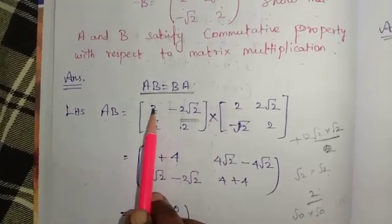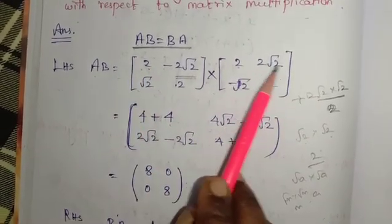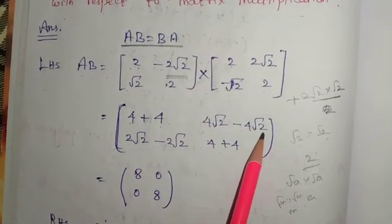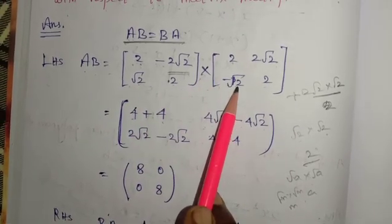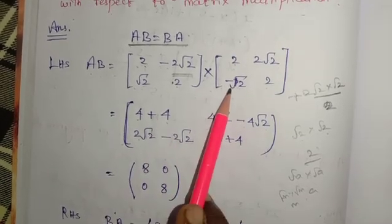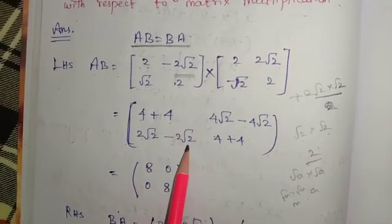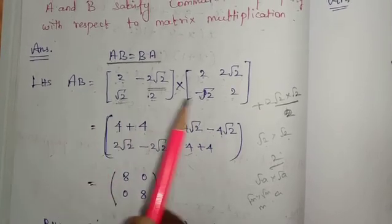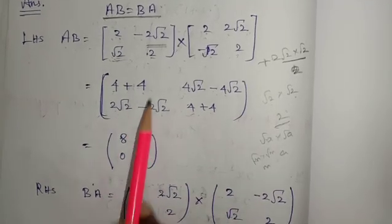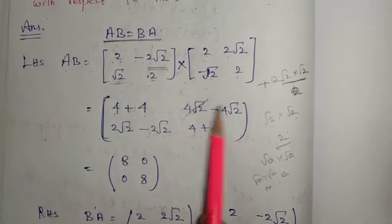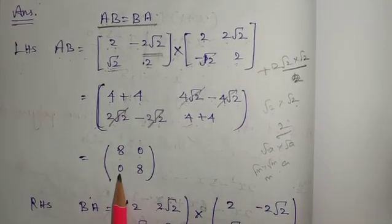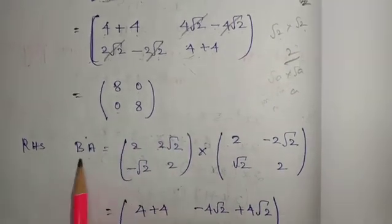Now we will do this: 2 into 2 root 2 minus 2 root 2 into 2. Root 2 into 2 root 2, 2 into minus root 2 minus 2 root 2. 2 into 2 is 4, 2 into 2 plus 4 root 2 minus 4 root 2 cancel is 0, plus 2 root 2 minus 2 root 2 is 0, 4 plus 4 is 8.